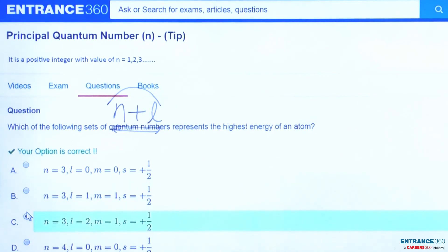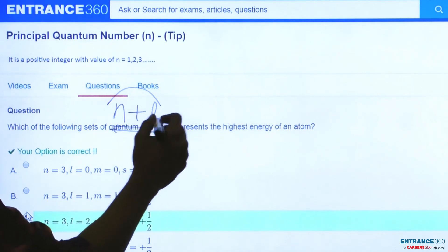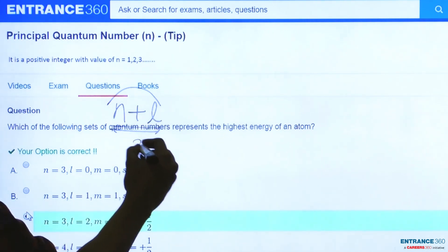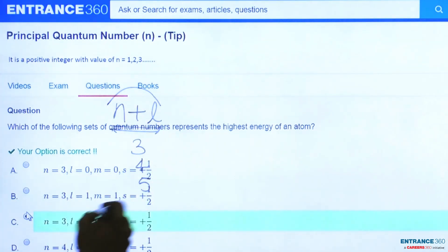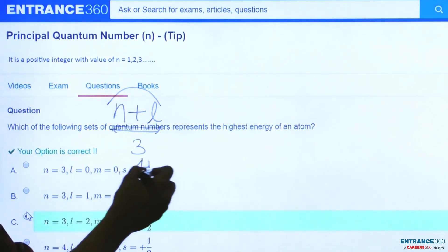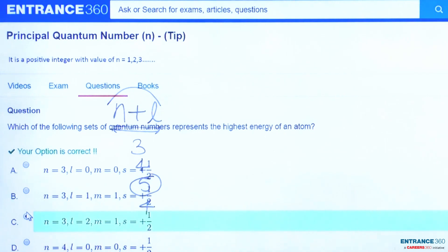From the given options, we can check: option A will have n plus l sum is 3, for option B this will be 4, for option C this will be 5, and for option D this will be again 4. So from these options we can see that n plus l value is highest for the C option. So again using this concept we can find our right answer, which is again C.